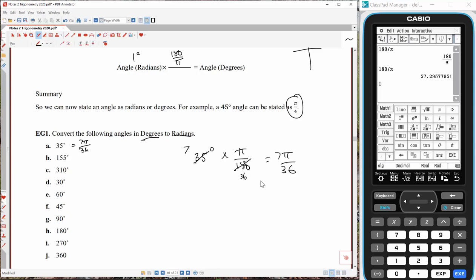155. So, that's going to be 155 multiplied by π on 180. And let's simplify that down. 3, 1, 3, 6. That's equal to 31π over 36. Apologies for the lack of space. This one here, 310. I'll just finish that one. 31π over 36.